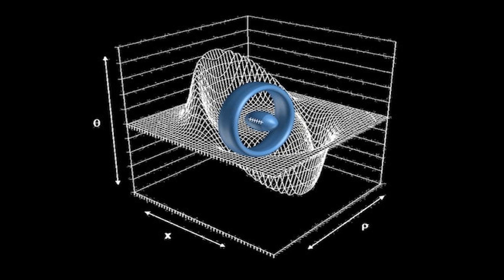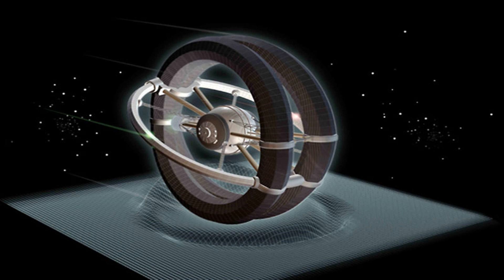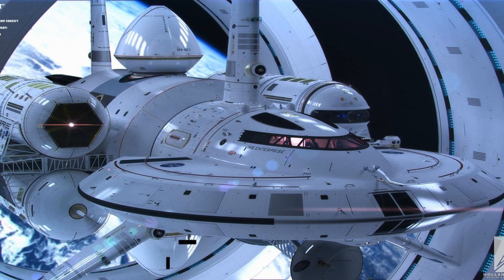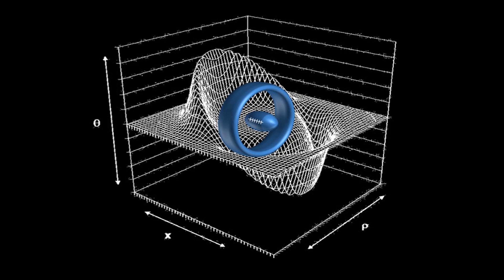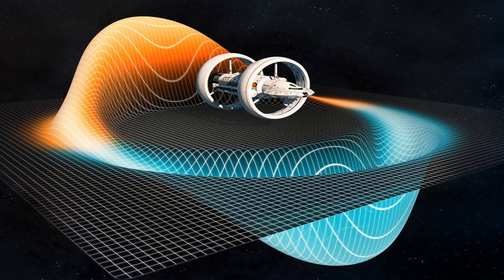In the realm of theoretical physics, the concept of warp drive has captivated the imaginations of scientists and science fiction enthusiasts alike. Inspired by the works of fiction, warp drive is a theoretical model that proposes the manipulation of spacetime to create a shortcut for traveling faster than light. This revolutionary idea suggests that by bending the fabric of spacetime, we could effectively warp the distance between two points, allowing for swift interstellar travel.